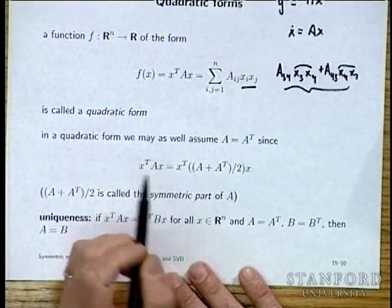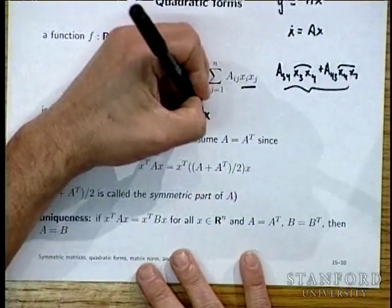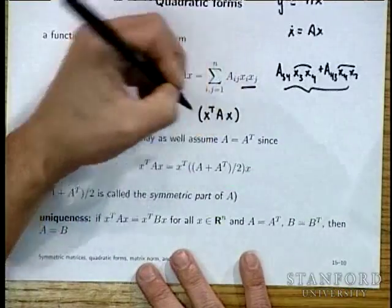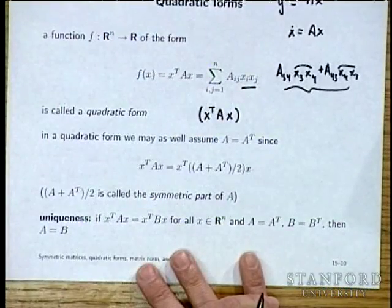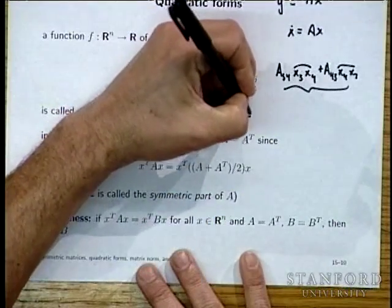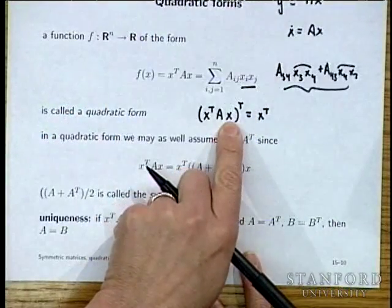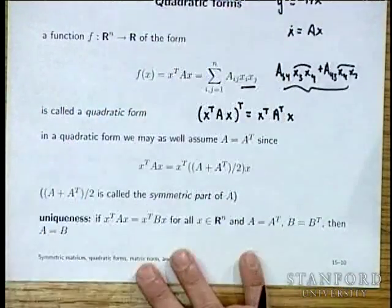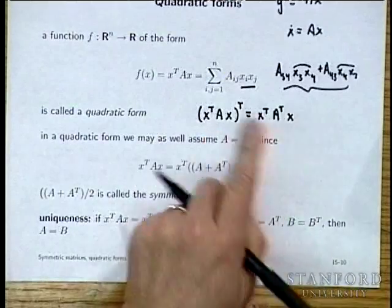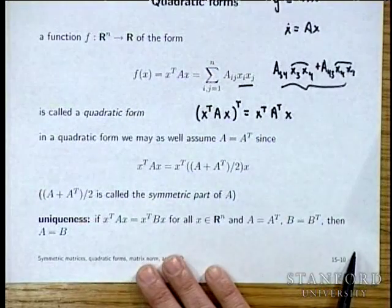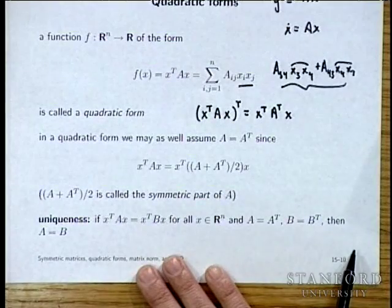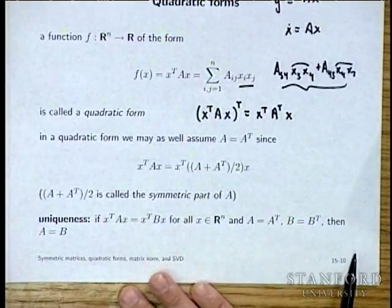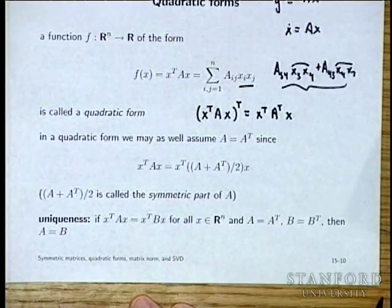Let's take X transpose AX — that is a scalar. If we transpose it, we get X transpose A transpose X, and this shows that A and A transpose give you the exact same quadratic form. So two quadratic forms are the same if, for example, their matrices are transposes of each other.